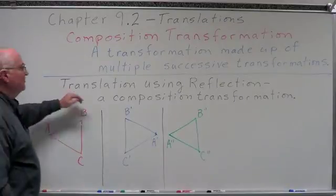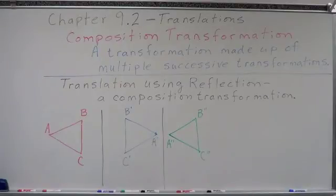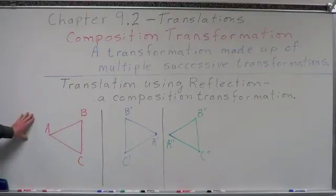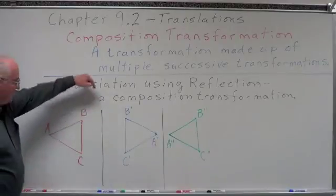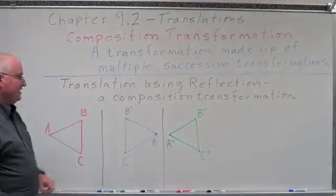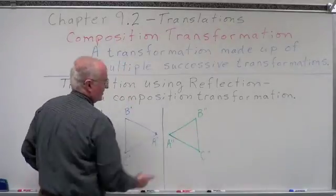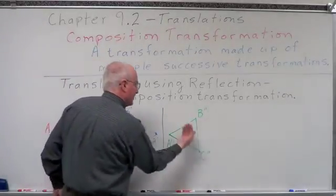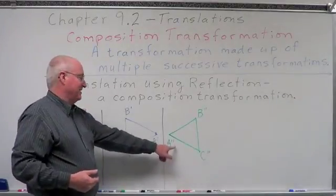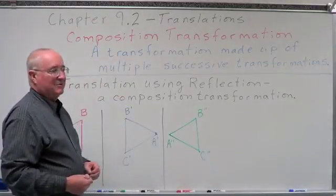Now we're going to do a translation using reflection across two parallel lines. This will actually move and slide the figure. We have triangle ABC. We reflect it across the first line of reflection — it flips, giving us A prime, B prime, and C prime. Then we have a second line of reflection. Our first image becomes a pre-image, and reflecting again gives us A double prime, B double prime, and C double prime.